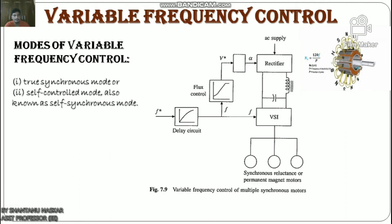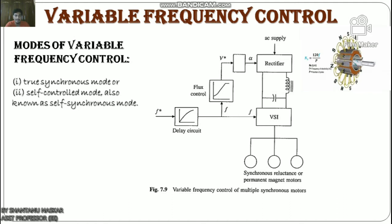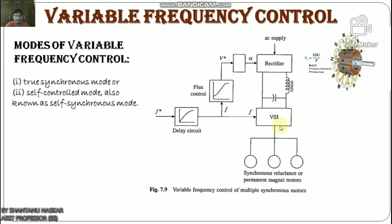For all types of synchronous motors, this gives operation with a constant pullout torque until rated voltage is reached at base speed. For higher speeds, the machine is operated at rated terminal voltage with variable frequency control, and the pullout torque decreases with an increase in frequency.